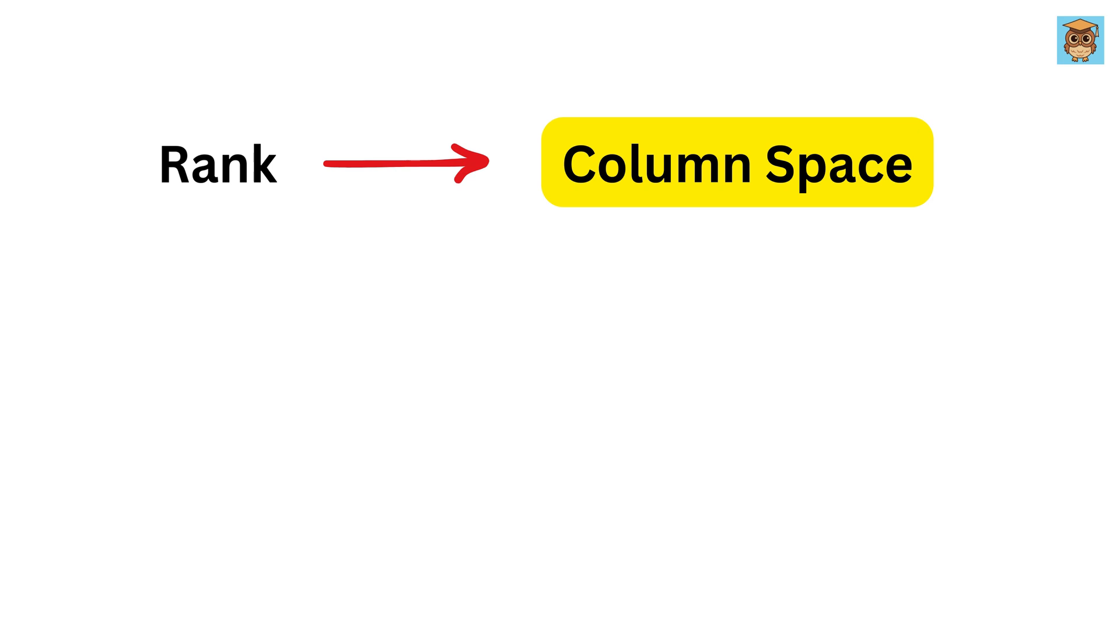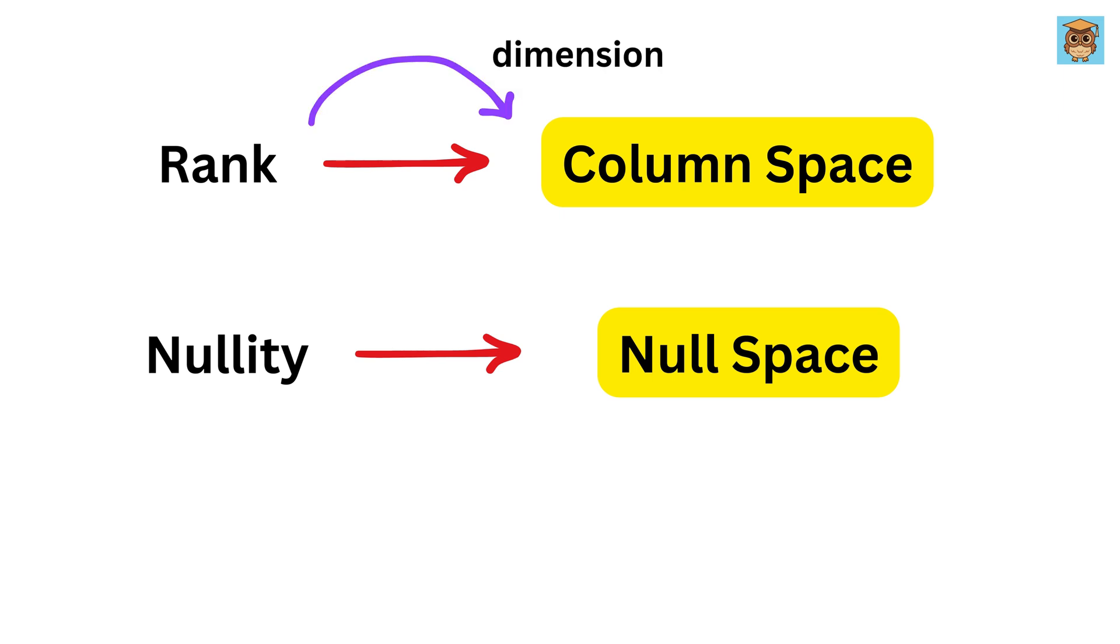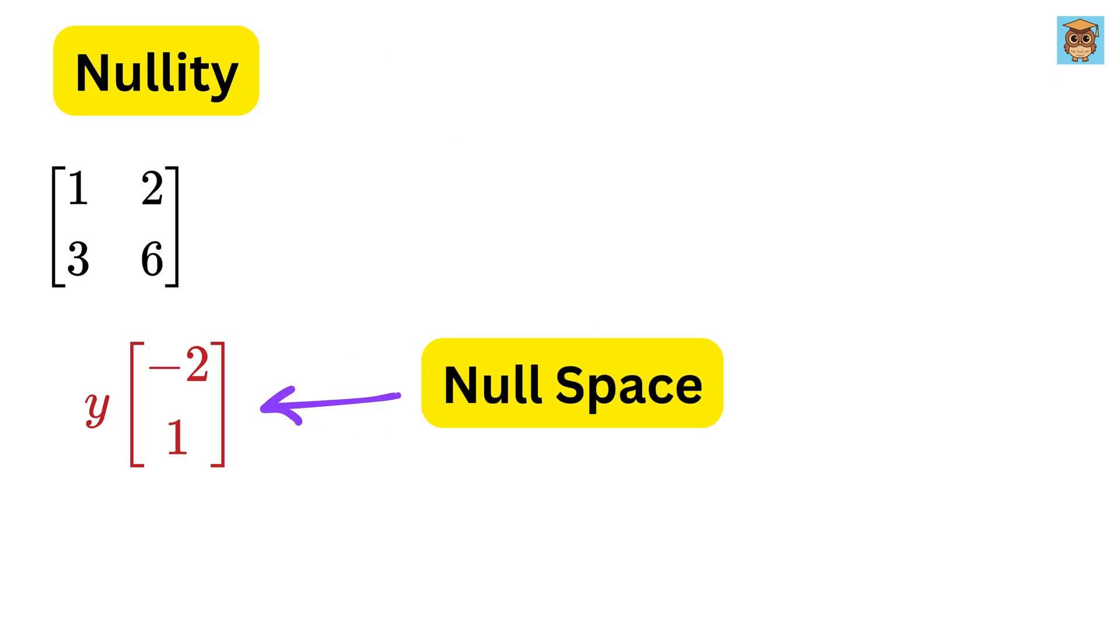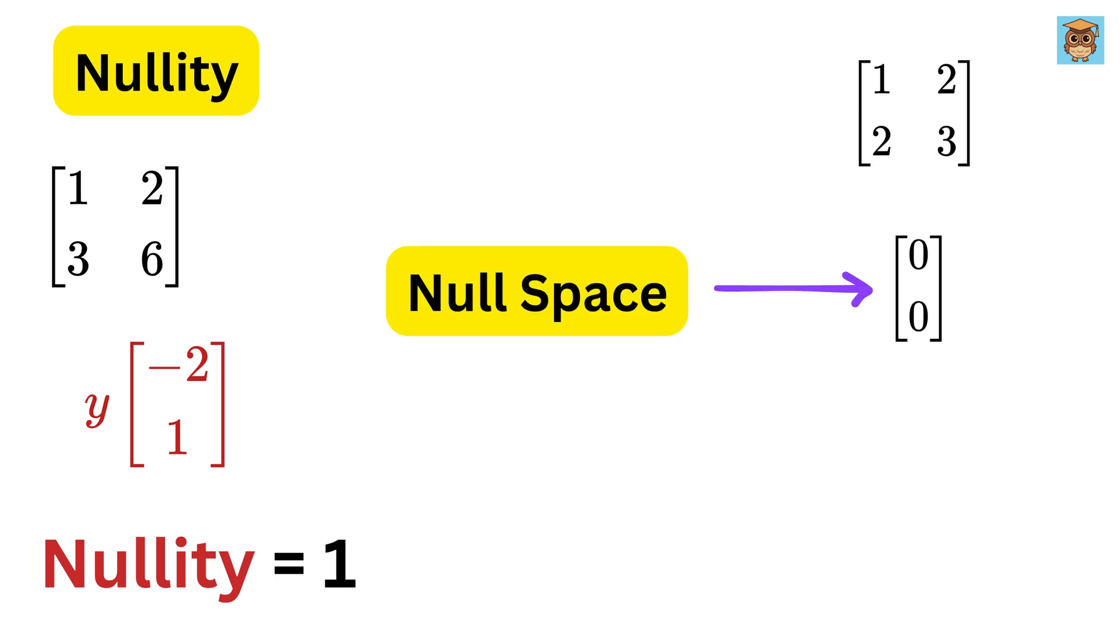Now, what rank is for column space? The same is nullity of null space, which means the rank of a matrix shows the dimension of its column space, and the nullity shows the dimension of its null space. So, in this case, the nullity of this matrix is 1, and for this case, nullity is 0.